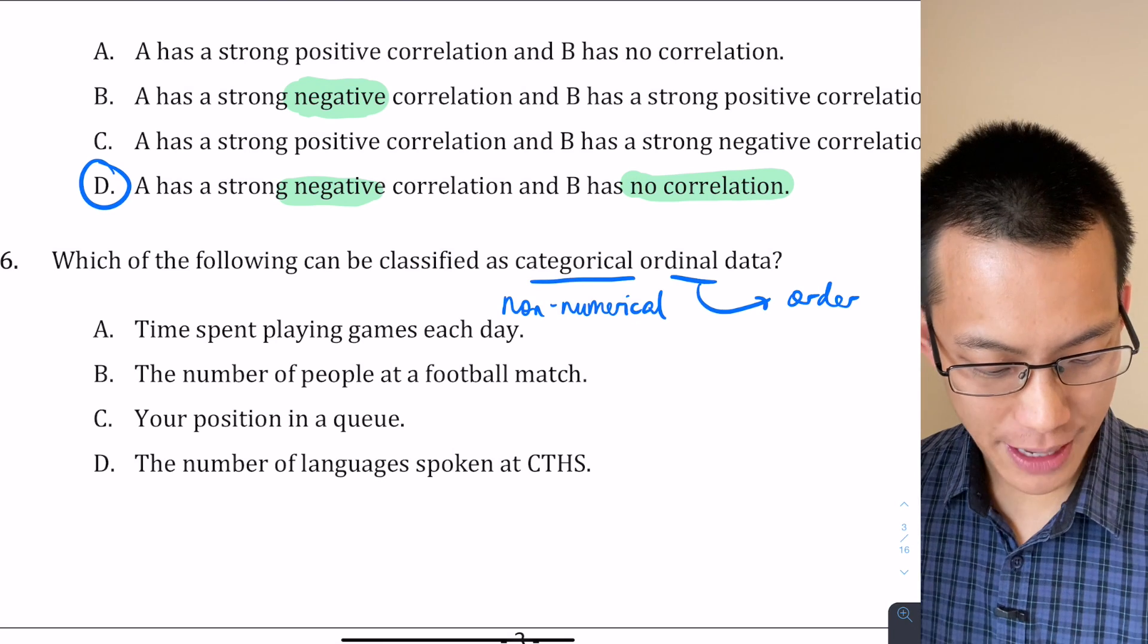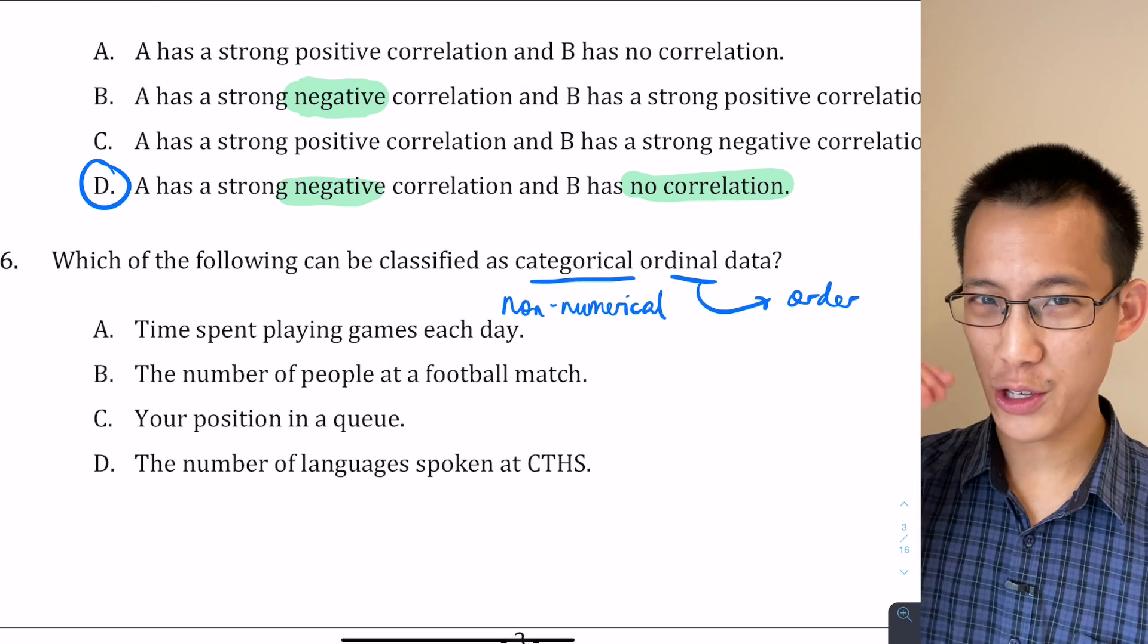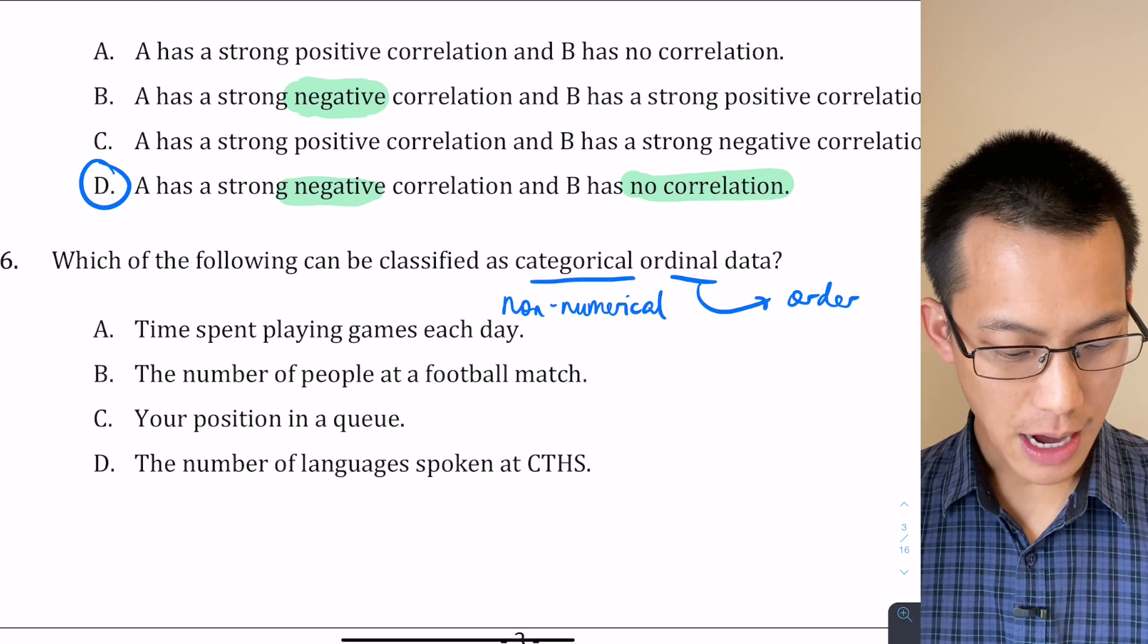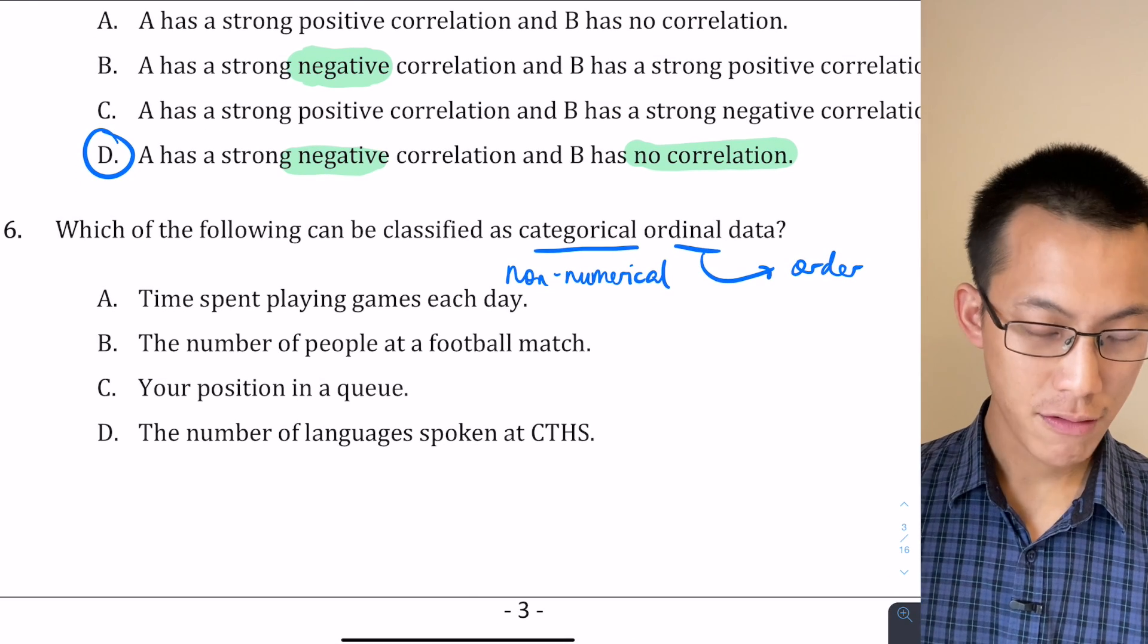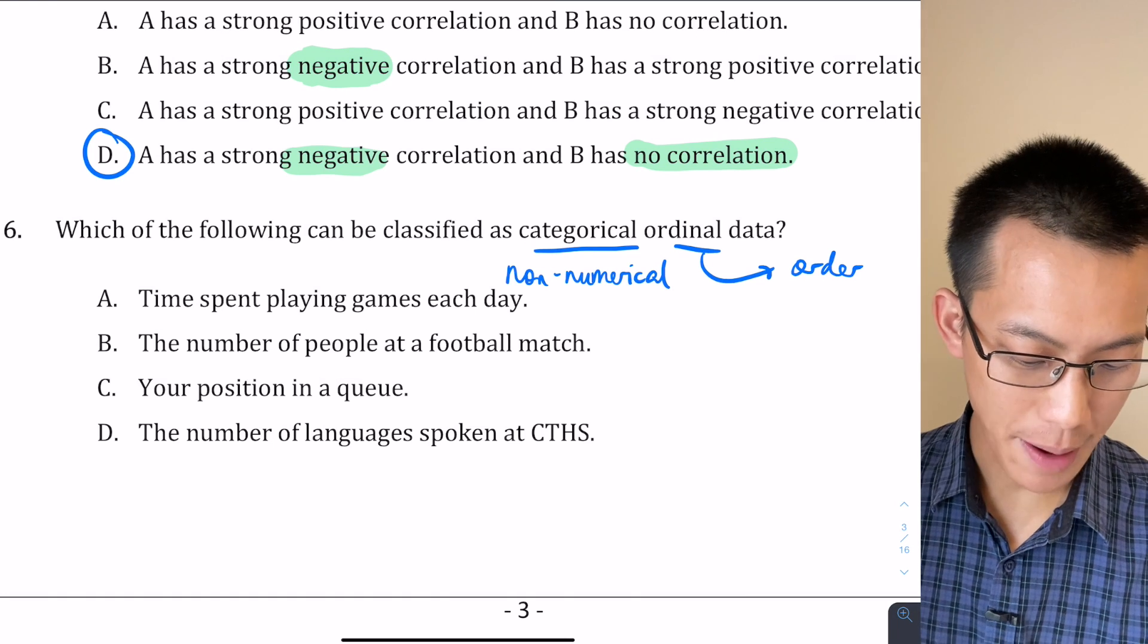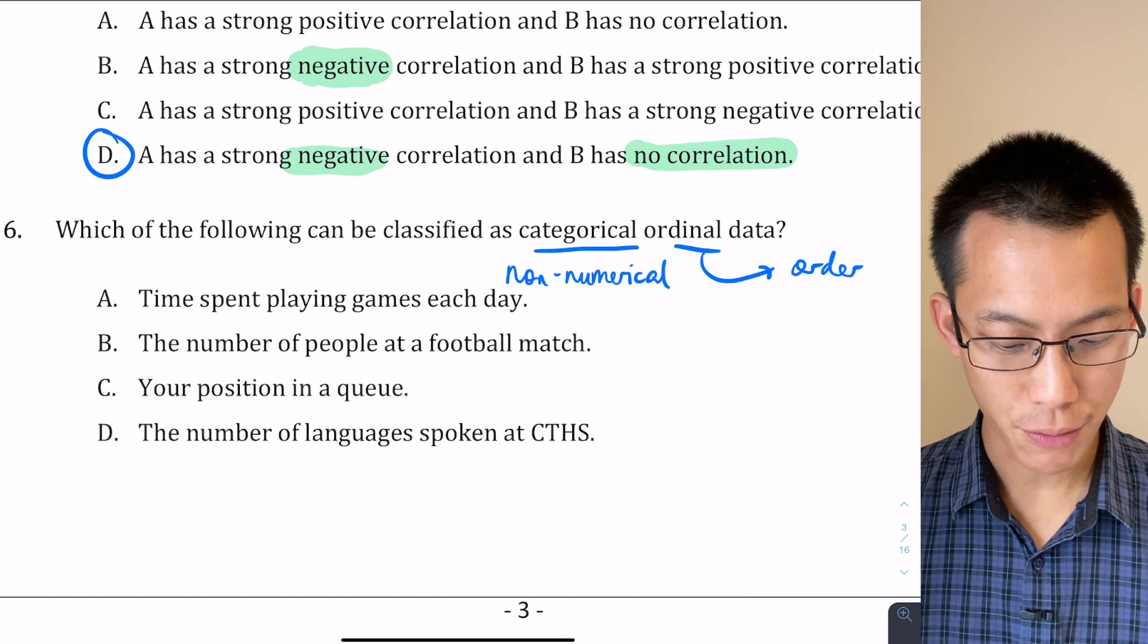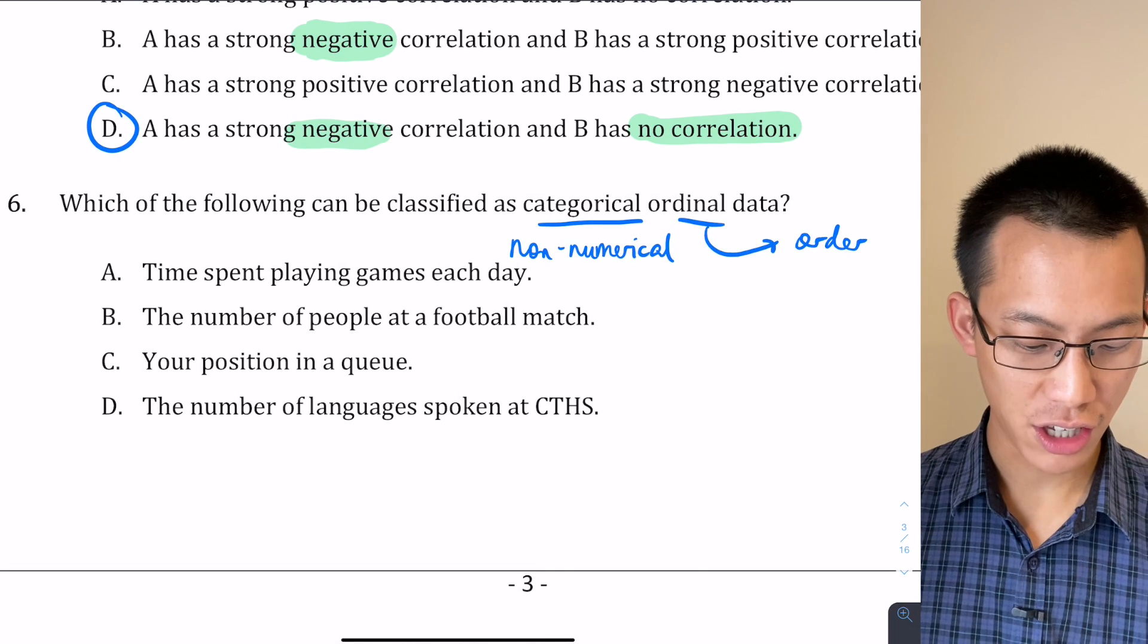When you have a look at A, B, C, D, which of these fits being non-numerical and also something you can place in an order? Time spent playing games each day—that would be an hour, two hours, three hours. B and D are kind of a giveaway because they say the number of people at a football match, and then C says your position in a queue.